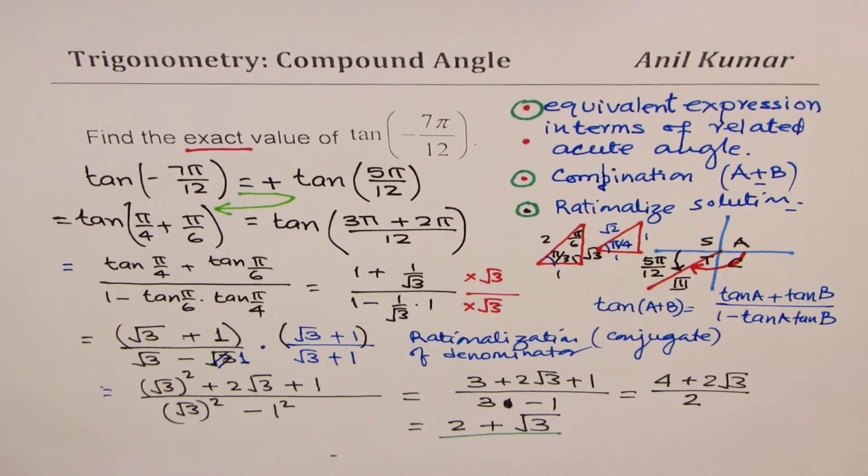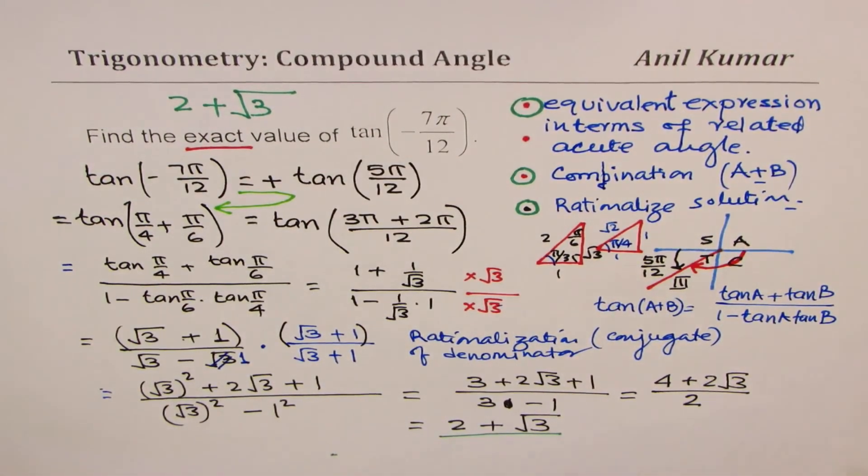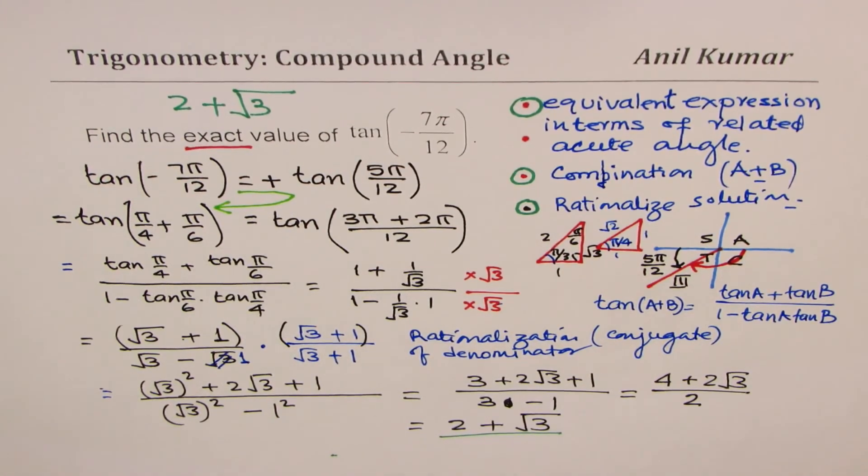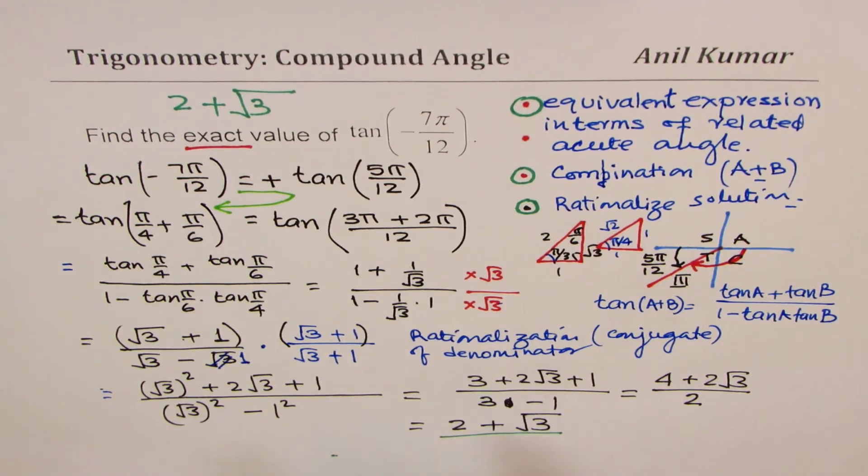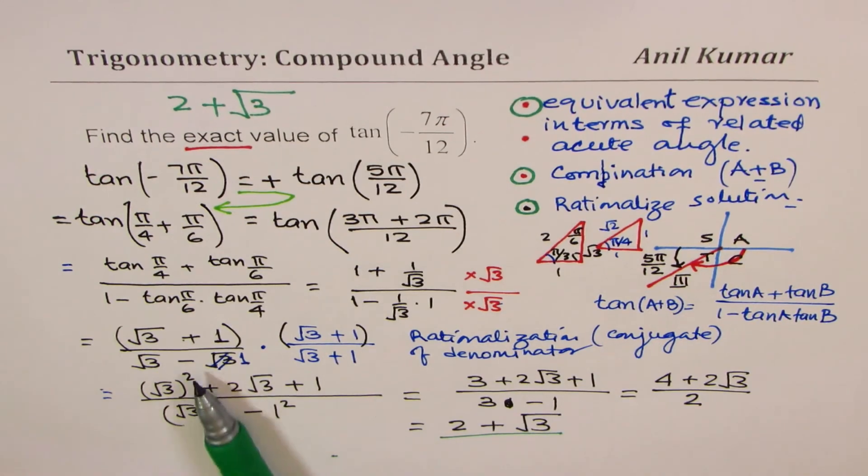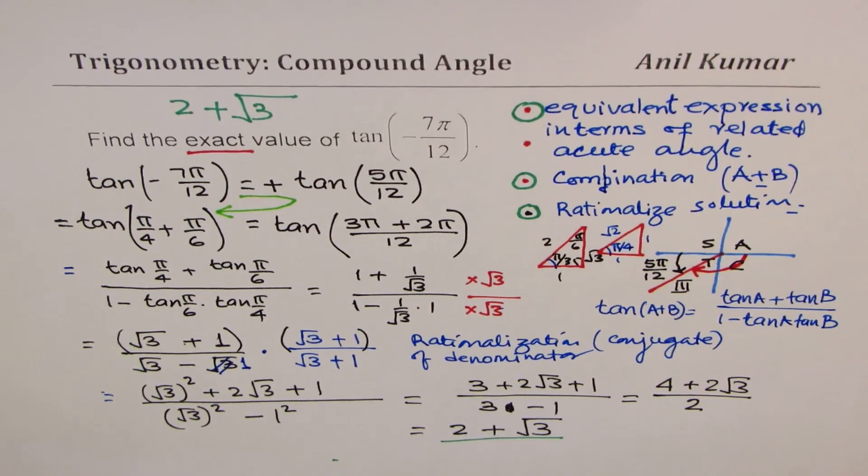So the exact value of this particular expression is 2 + √3. That could be one of your choices in multiple choice question. Be open for rationalization to match your answers at times. I hope you liked the approach and enjoyed the solution. Feel free to write your comments, share your views, and if you like and subscribe to my videos, that'd be great. Thank you and all the best.